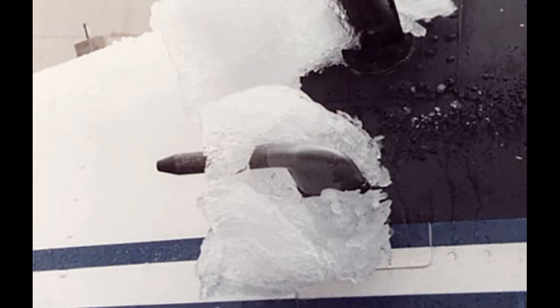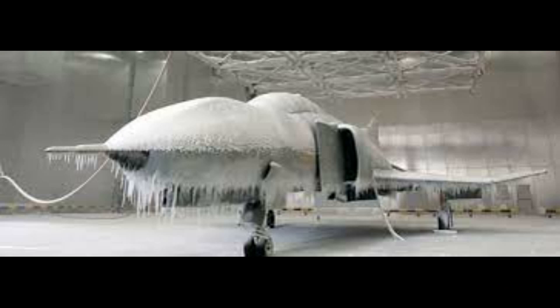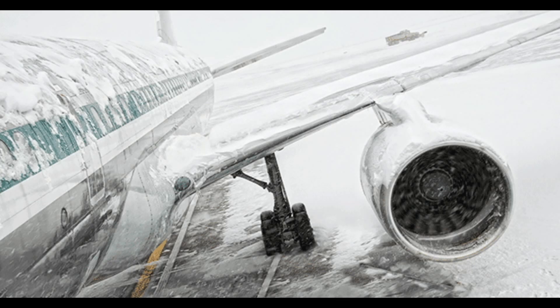Pitot tubes and static ports freezing and sending wrong data to the cockpit is another negative situation. An aircraft exposed to all these negative situations may lose control and crash in seconds. The most important point regarding icing in flight is to prevent icing before it occurs, because if icing reaches a certain amount, the protection systems do not provide much benefit anymore.